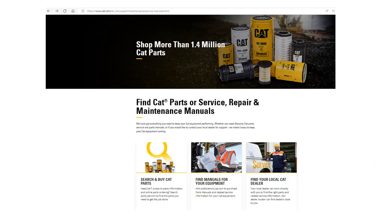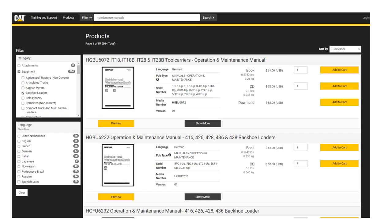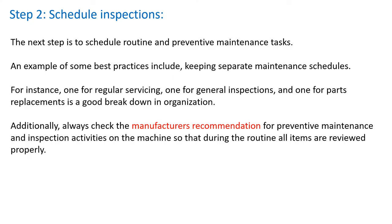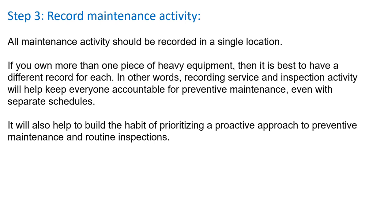Many OEM and equipment suppliers make service and maintenance manuals available online — here's an example of CAT's website and a snapshot from their service manual download page. Record keeping is critical for ensuring well-maintained equipment; without good records, we cannot identify patterns or problem areas. All service and maintenance activities should be well documented using templates or dedicated software programs. Inaccurate, incomplete, or non-existent maintenance records could also become an issue with warranty or legal matters.